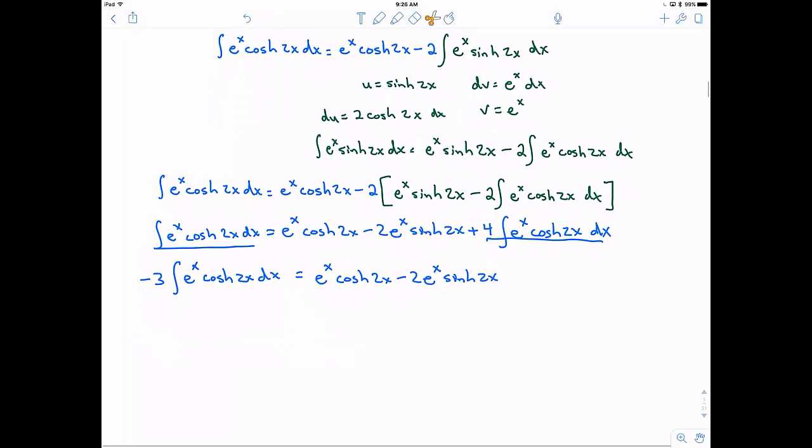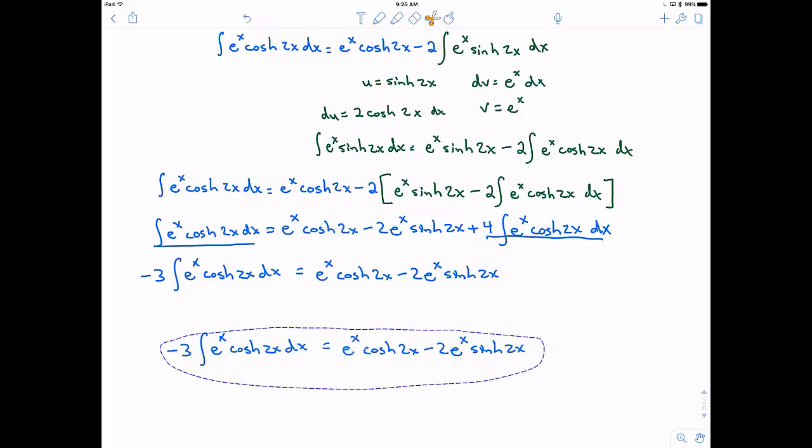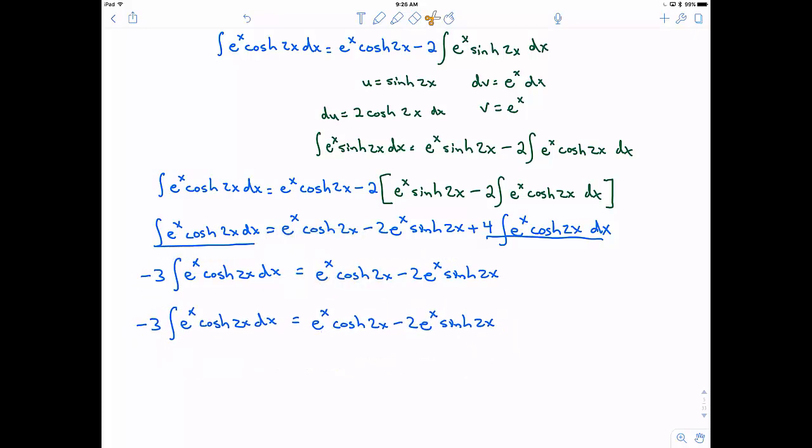And then the rest of it is all the same. So then finally, if I wanted to solve for this integral. Well, the only thing I would have to do now is just move that negative 3 into the denominator, right? So I divide by negative 3 here. And voila! I have now solved for this thing.